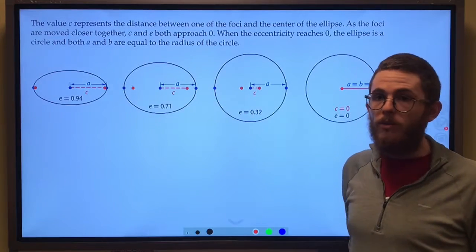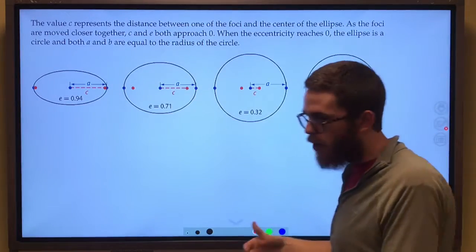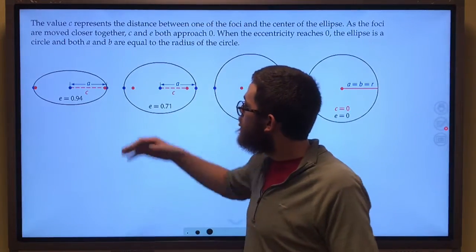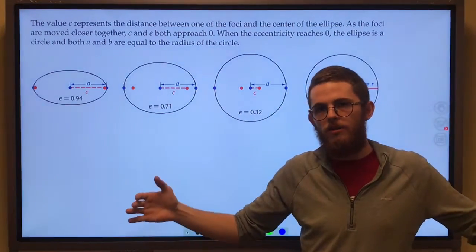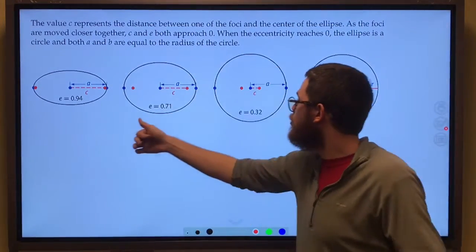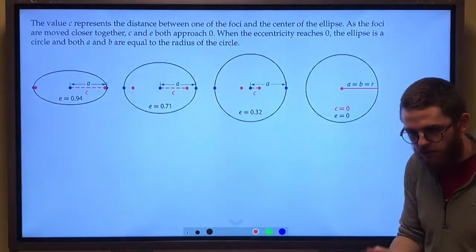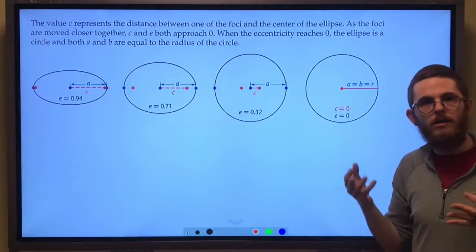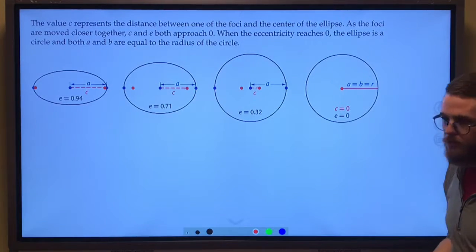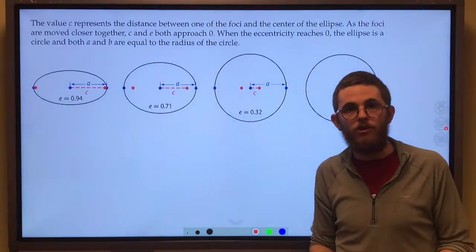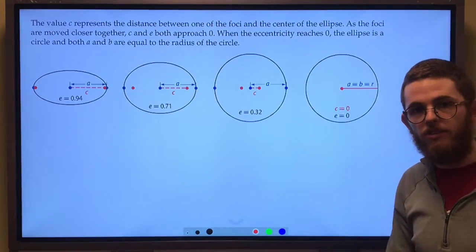The eccentricity is always going to be between one and zero, some number in between. The closer it is to one, the more stretched out it has become. The closer it is to zero, well literally the eccentricity being zero would be a circle. So the closer it is to zero, the closer it is to looking like a circle. The less stretched out the major axis ends up coming.